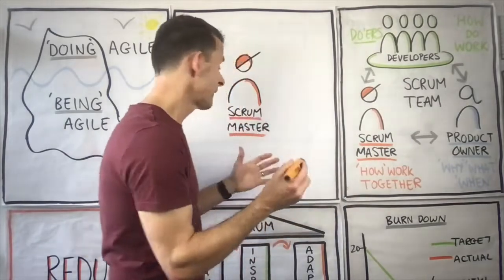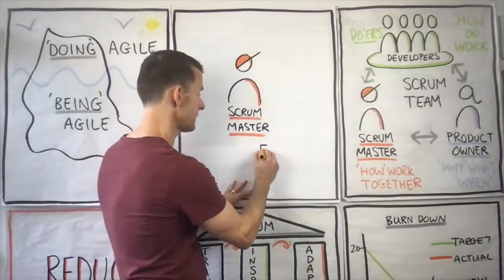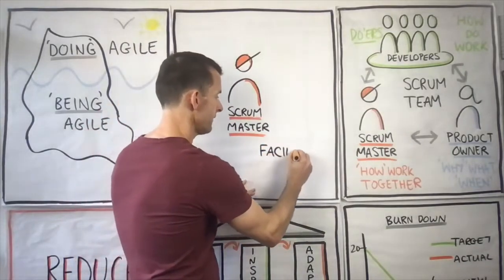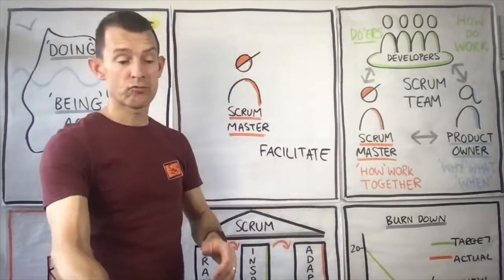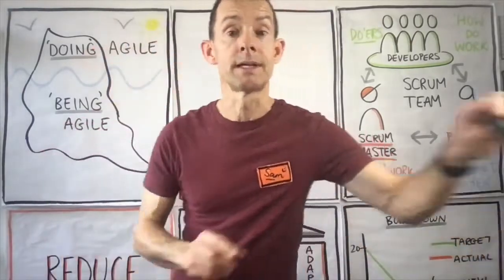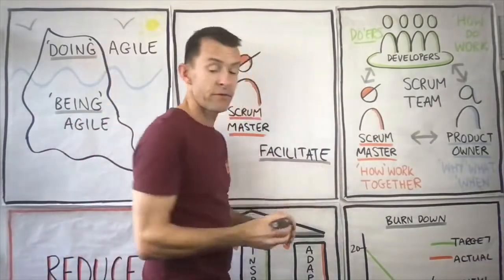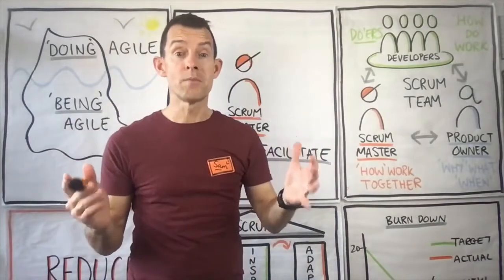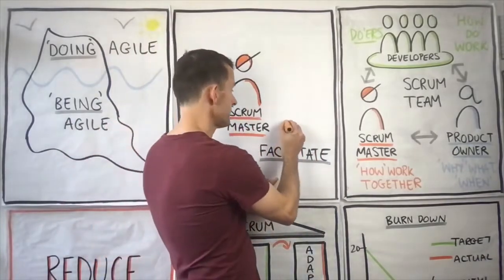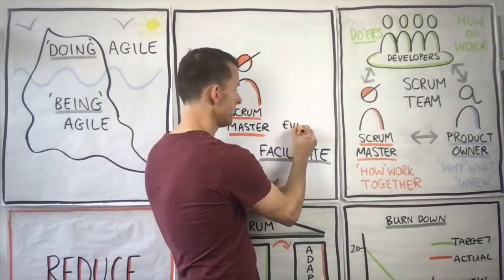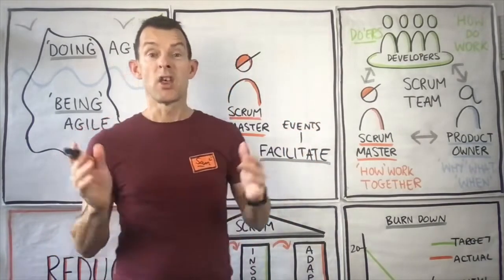The first thing the Scrum Master is well known for is facilitation — and this is a key part, a really interesting skill in terms of being a great facilitator. The first thing they facilitate is the events or meetings of Scrum, like the Daily Scrum, Sprint Planning, the Sprint Review, and the Retrospective.